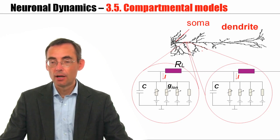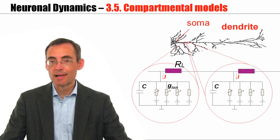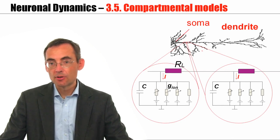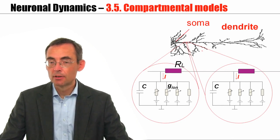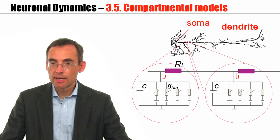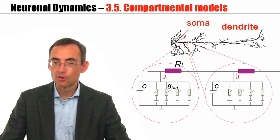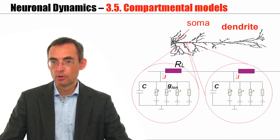Now, if we have ion channels with interesting dynamics spread out all over the dendrite, then it turns out it's much better just to simulate directly the discrete model, and this is called a compartmental model of a neuron, or a compartmental neuron model.